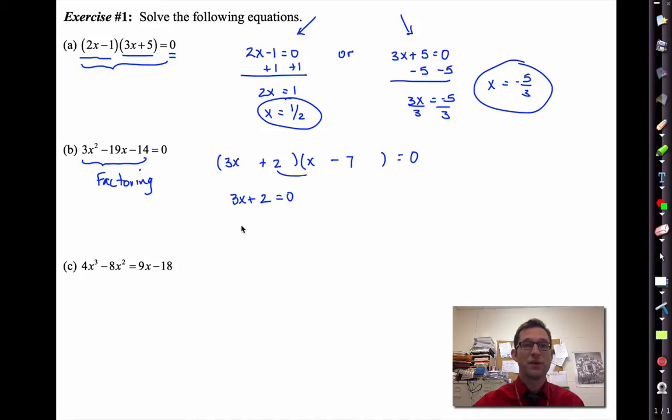Once I have this product equal to zero, we're back to letter A. We'll have 3x plus 2 equal to zero, solve and get negative 2 thirds. And we'll have x minus 7 is equal to zero, solve that and get 7.